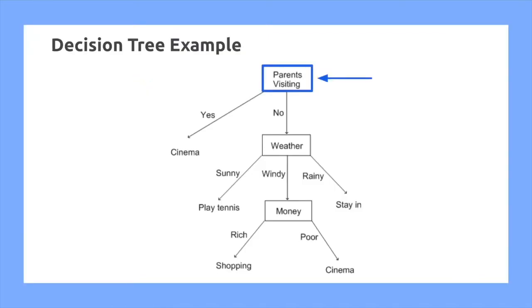I can see that my parents aren't visiting, so I should simply follow the no edge. I check the weather, and it seems to be windy, so I follow the windy edge. I check that feature of money, and it turns out I'm poor, so I follow the poor edge, and I return cinema when we go to the cinema.